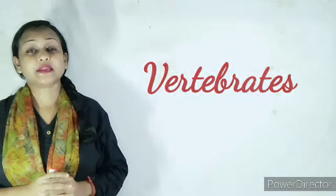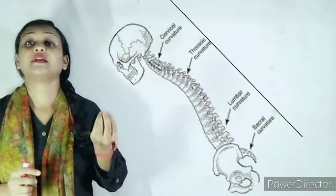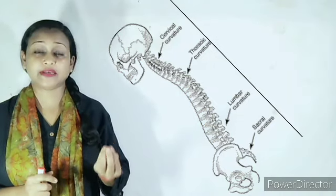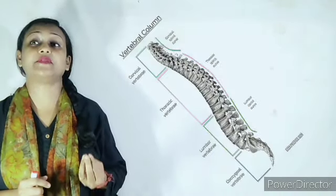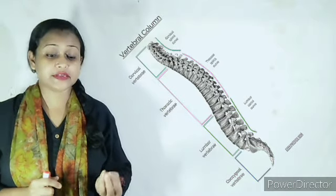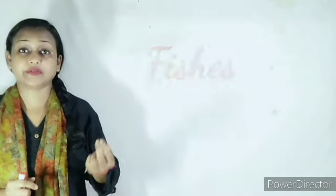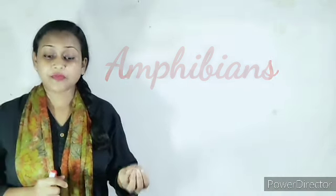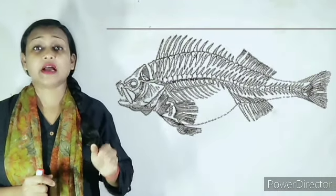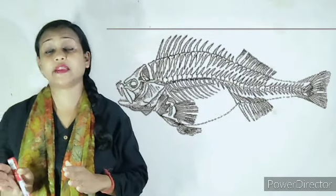Vertebrates are those animals which have a vertebral column — that is, the body consists of a framework of bones. For example, all fish, reptiles, amphibians, birds, and mammals are vertebrates.